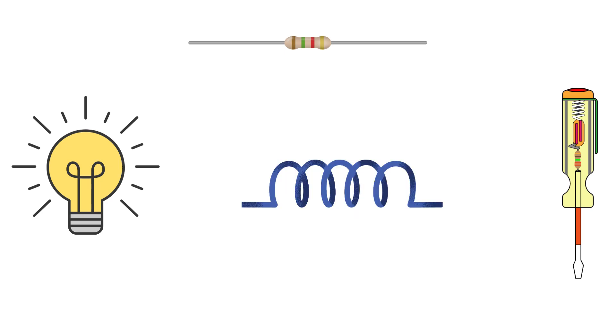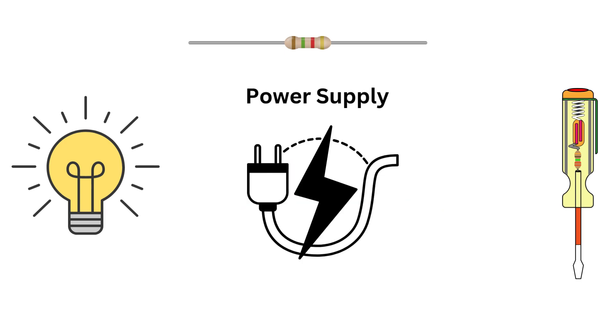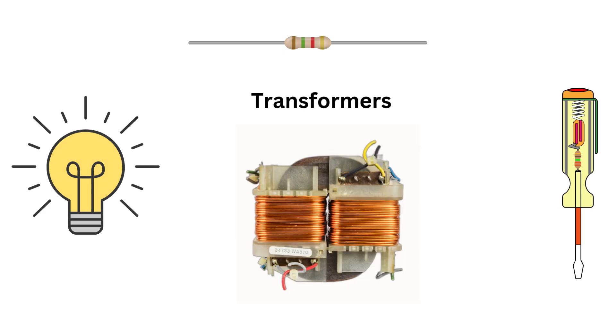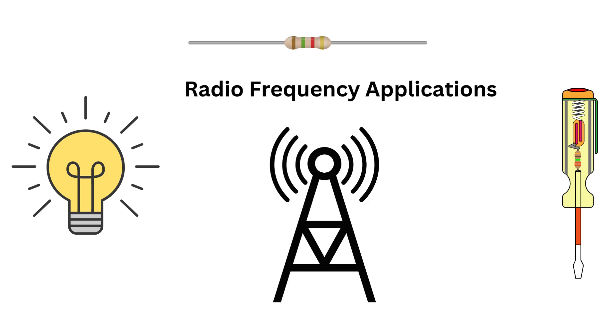So where do we find inductors in the real world? Here are a few common applications. Power supplies, they smooth out the output voltage. Transformers, inductors are key components in transformers allowing for voltage conversion. And radio frequency applications, they help tune circuits to specific frequencies.